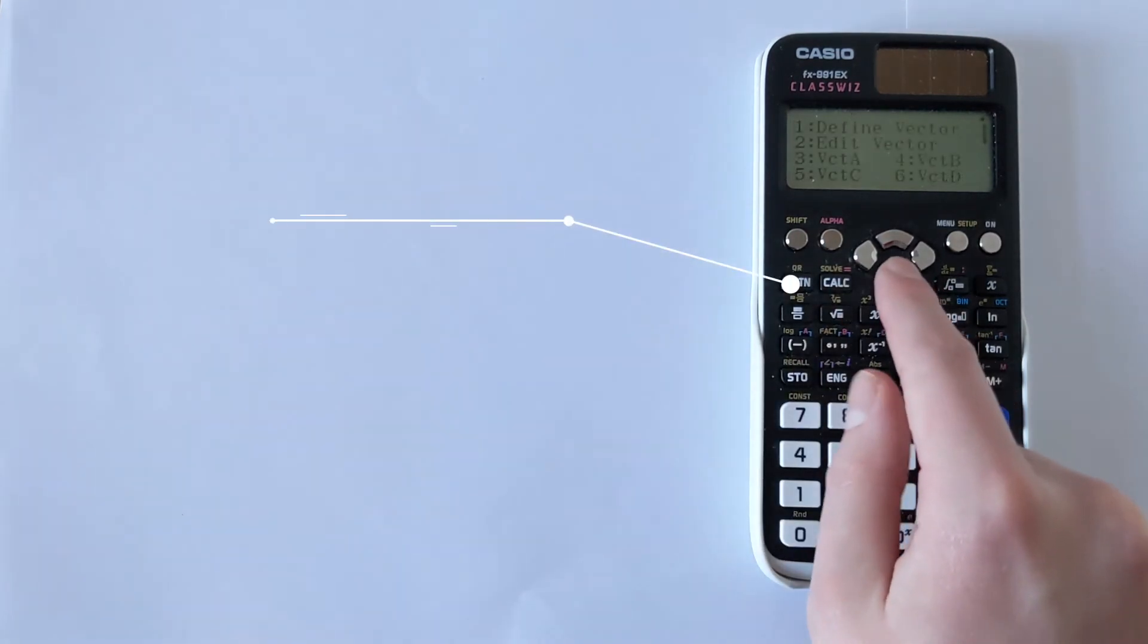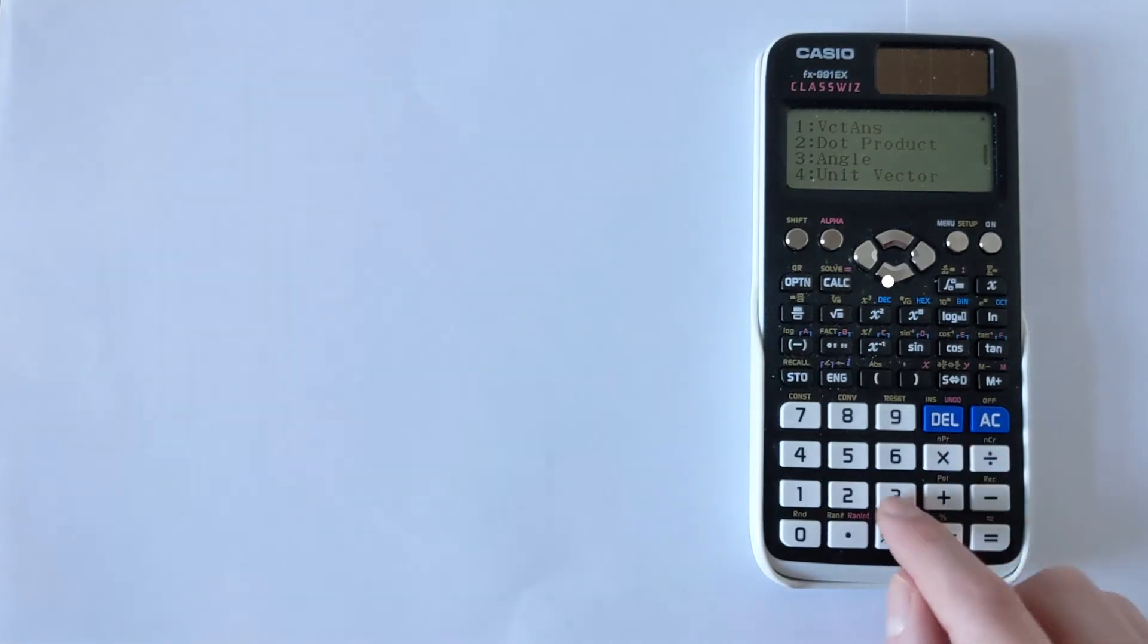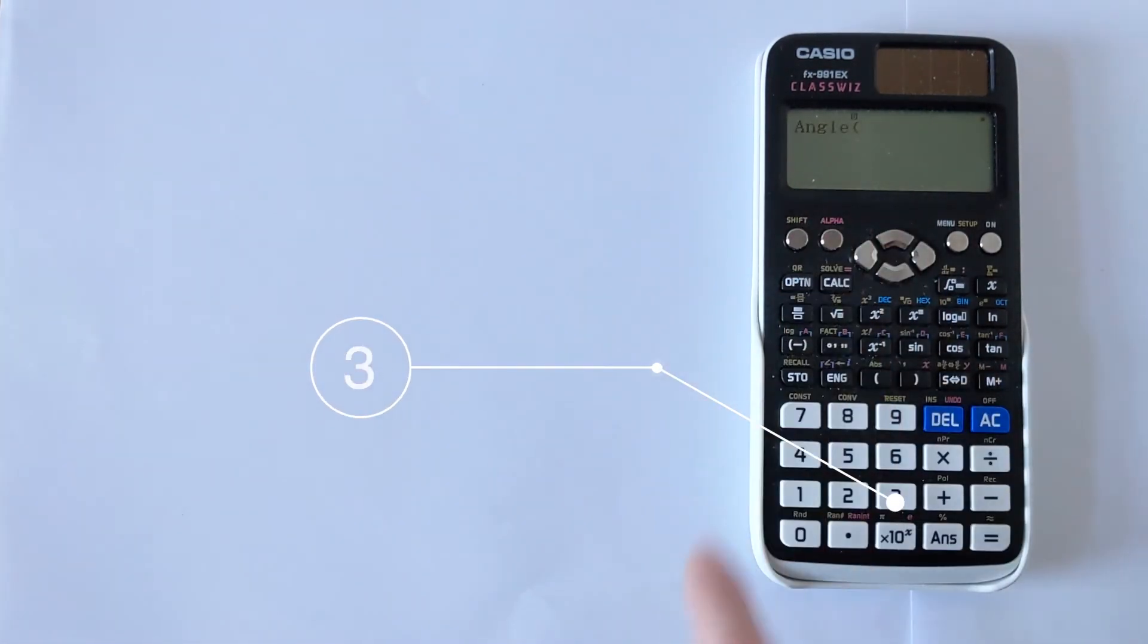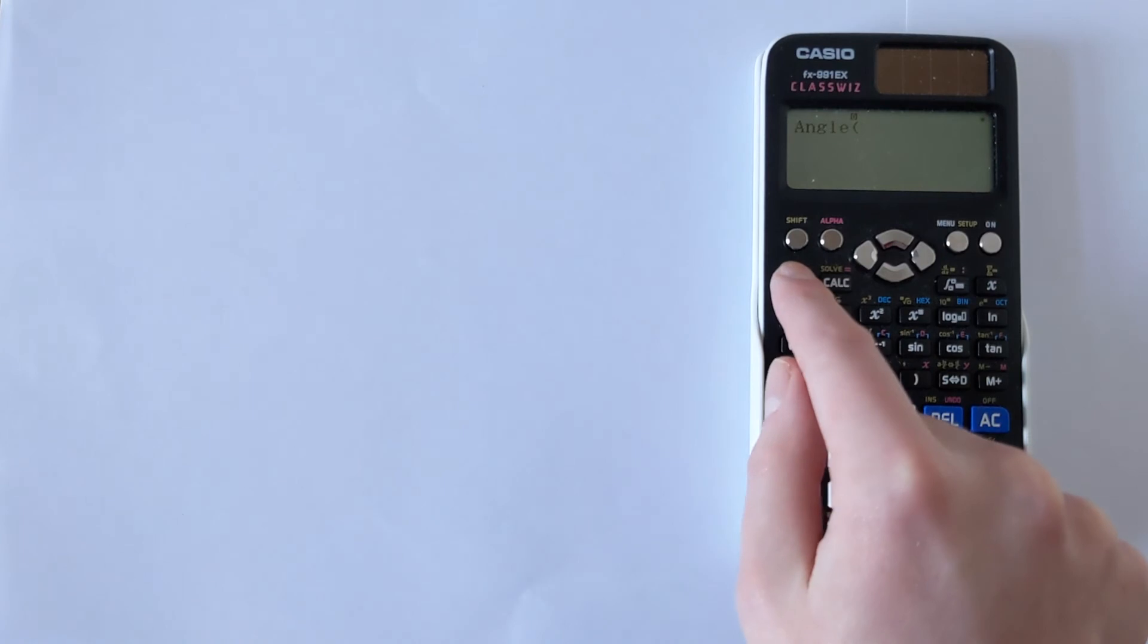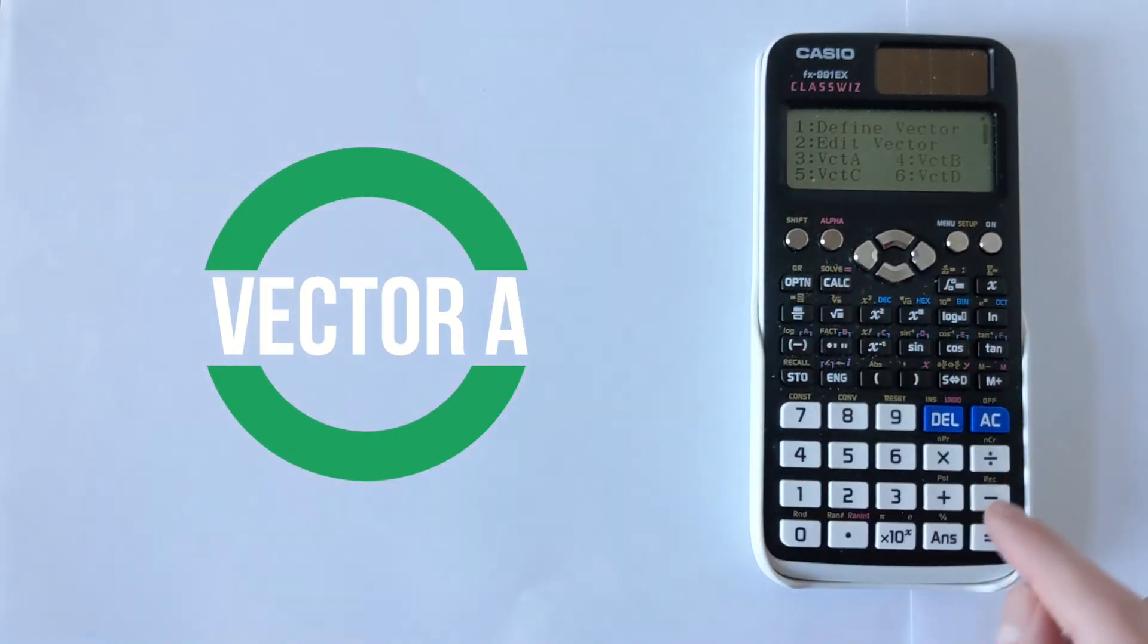We want option. If we go down, you'll find the option on 3 for angle. We press 3. That will bring up one bracket. We need to recall the two vectors. We want vector A, which is on option 3.